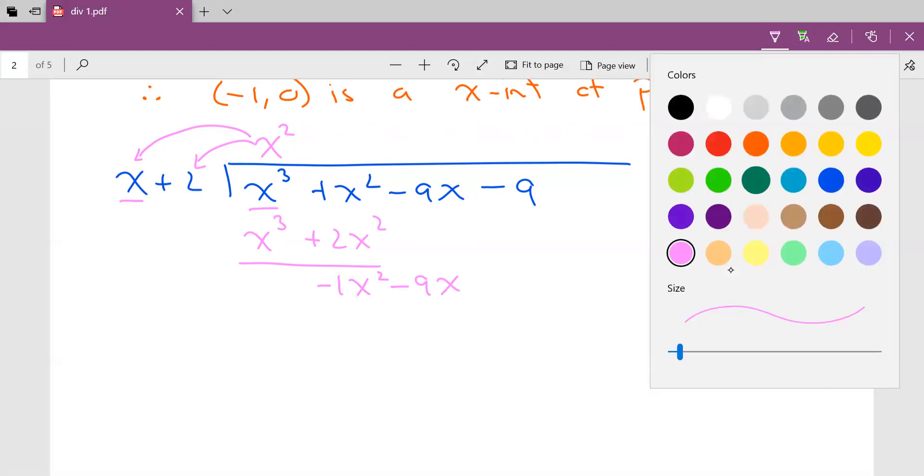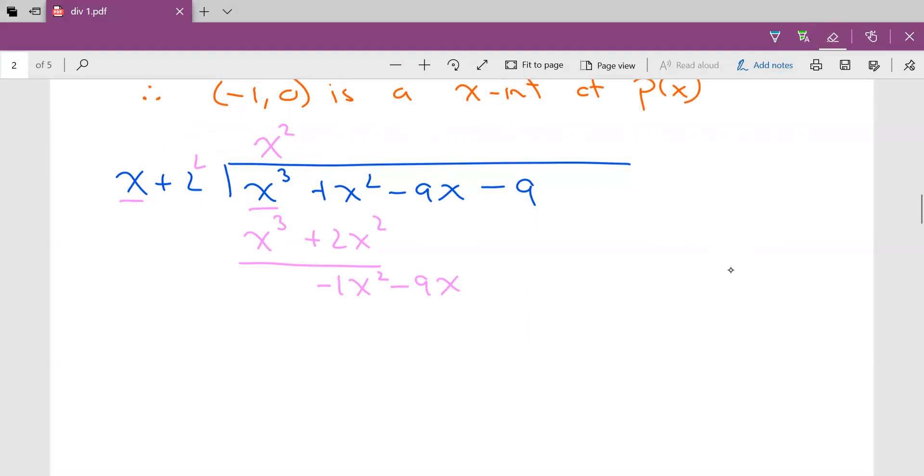And repeat. So I say to myself this time, what am I going to multiply x by to get -1x²? Well, I'm going to multiply by -1x. And we then multiply. So -1x multiplied to both of these: -1x² - 2x. And subtract. -1x² minus -1x² is 0, of course. -9x subtract -2x will end up being -7x. Bring down the next term.